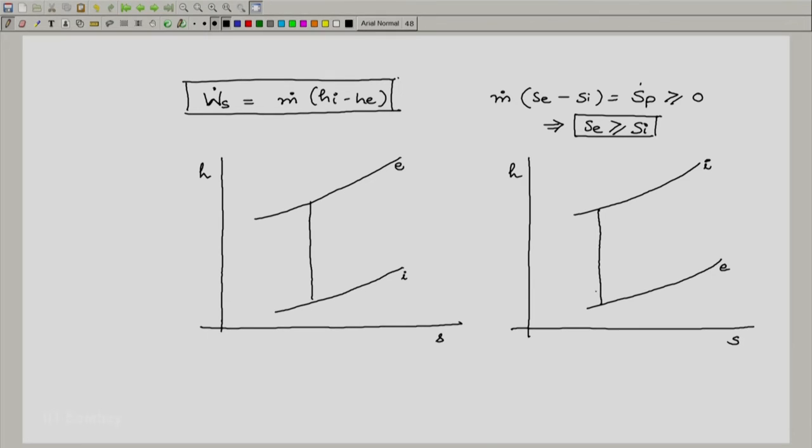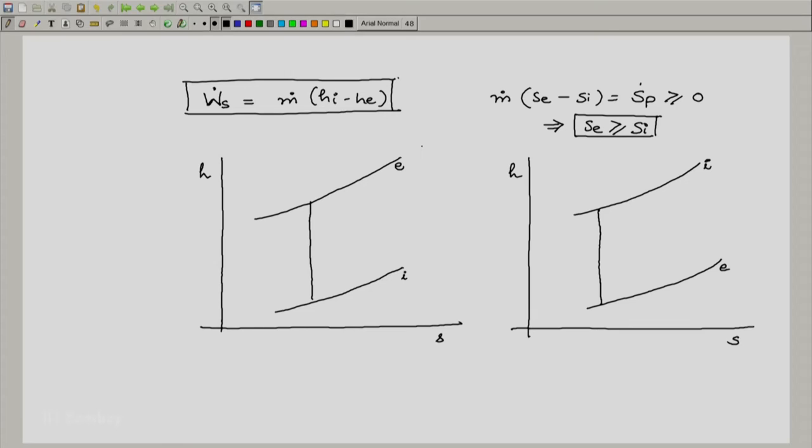You'll notice that the isobars are drawn with their slant going upwards towards the right. We had a property relation for a simple compressible substance where dh equals tds plus vdp. Along an isobar, dp equals zero, so dh is just tds. Hence the slope on an h-s diagram, dh by ds, would just be T, which is the absolute temperature—a positive quantity, giving a positive slope.